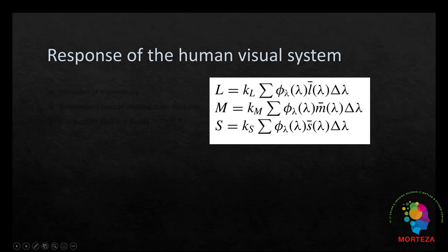So, this spectral power distribution of the stimulus means the reflectance of the stimulus and the light source, the multiplication of the two at each wavelength.